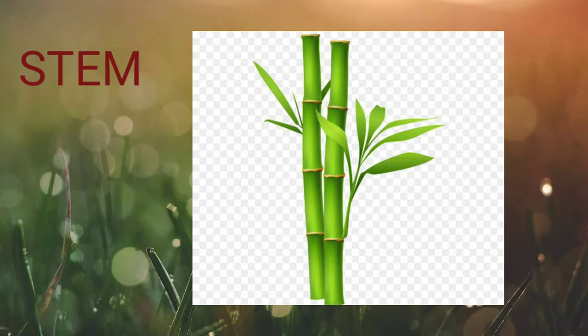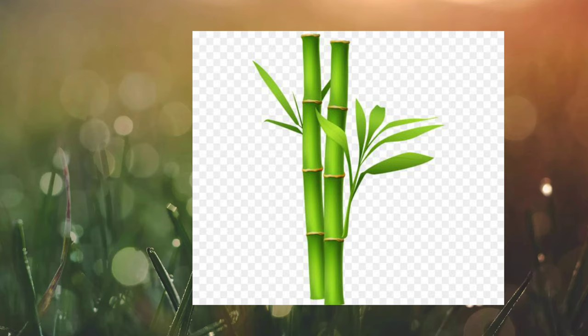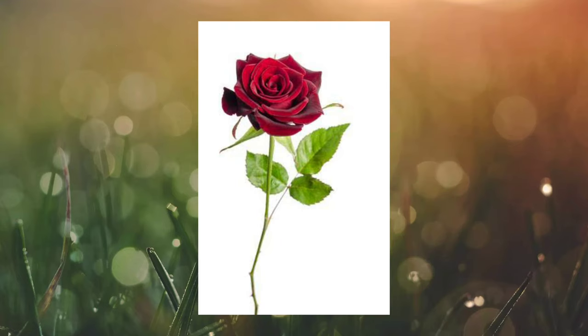Now let us learn about stem. Stem supports the plant by holding the flowers, fruits, branches and buds. They also transport water and nutrients to various parts. In few plants like sugarcane, the stem also stores food material. In some plants like rose, the stem also helps in vegetative propagation and thus helps in reproducing new plants.